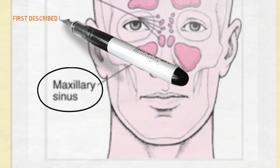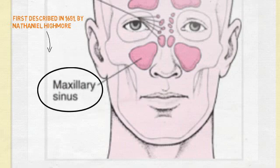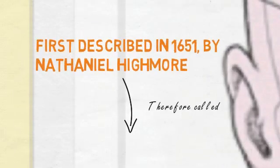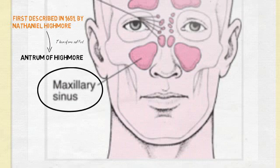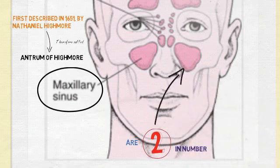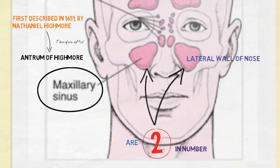The maxillary sinus was first described in 1651 by Nathaniel Highmore, and that is the reason it is called the antrum of Highmore. The maxillary sinuses are two in number, one on either side of the maxilla, and they are the largest of the paranasal air sinuses. They communicate with the other sinuses through the lateral wall of the nose.